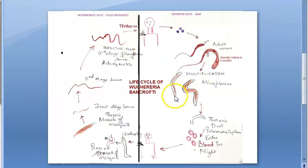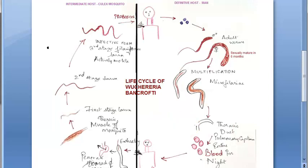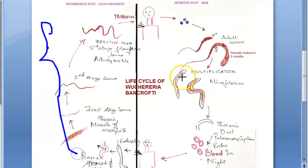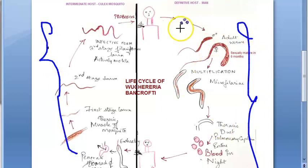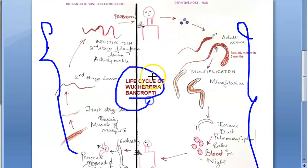We will try to explain the entire thing about Wuchereria bancrofti using this diagram. You can see there is a line in the middle — this side represents the mosquito part and here you have the man part. For Wuchereria bancrofti, in the life cycle, the definitive host is man and the intermediate host is the Culex mosquito.